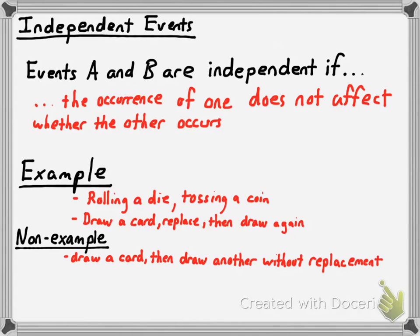Non-examples: you draw a card and then draw another without putting it back. If you drew the seven of hearts the first time, there's no way you can get that again, so the outcome of the second draw is affected by the first draw. Similarly, if you were the one playing in the soccer game, what you ate for breakfast might actually affect the outcome. Those would be examples of dependent events.